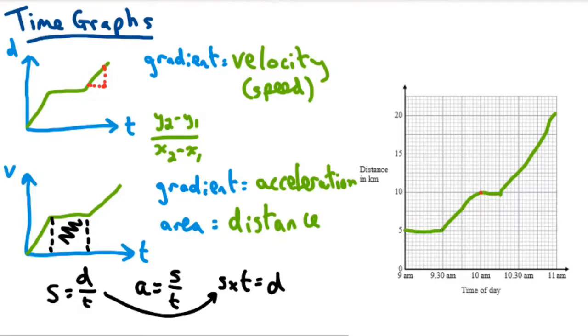So, instead of taking this as 30 minutes, I'm going to take that as half an hour. The gradient then here, so just from here to here, we've gone up by five kilometers in 0.5 hours. So, five divided by 0.5. That's going to get us a speed of 10 kilometers per hour.